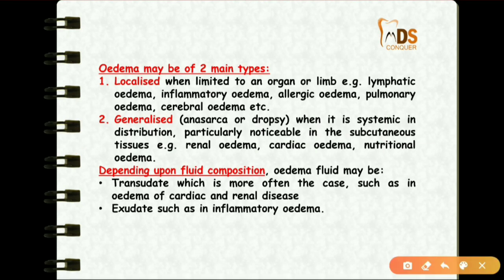Coming to the classification, it is of two types: localized edema and generalized edema. Generalized edema is also called anasarca or dropsy. Depending upon the fluid composition, edema may be either a transudate or an exudate.